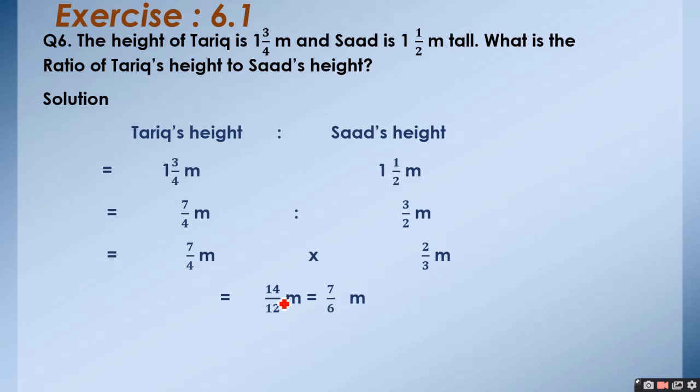And when we reduce it into the lowest term by cancellation, it will be 2, 7's are 14 and 2, 6's are 12. So 7 upon 6. Or you can say that 7 meter ratio 6 meter.